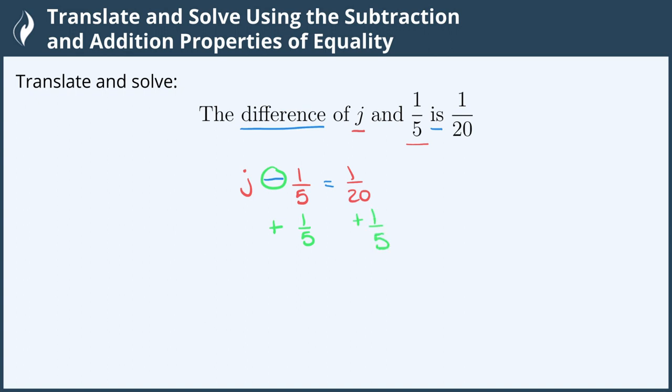On the left side negative one-fifth plus one-fifth cancels and so we're now only left with j which is exactly what we wanted to isolate the variable. Then on the right side we have one-twentieth plus one-fifth.